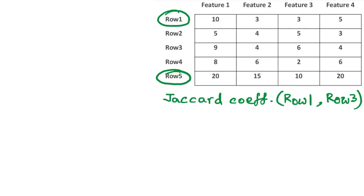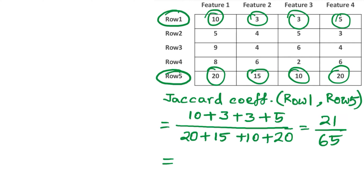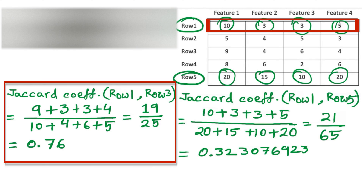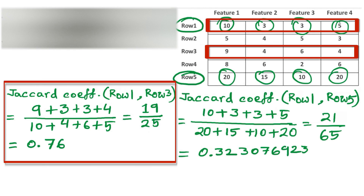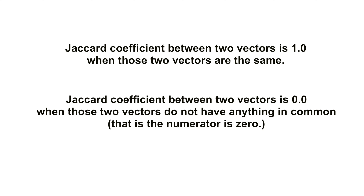Let us compute the Jaccard similarity between row 1 and row 5. This results in 21 divided by 65, which gives 0.323. That means row 1 is more similar to row 3 than to row 5. Weighted Jaccard similarity may vary between 0 and 1. A value of 1 indicates that the two vectors are the same, and a value of 0 indicates no similarity between the two vectors.